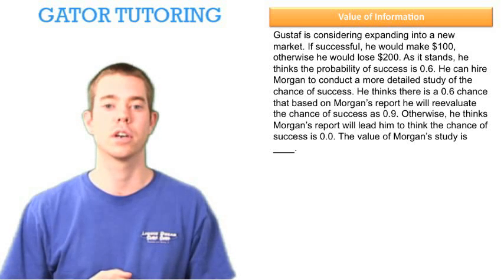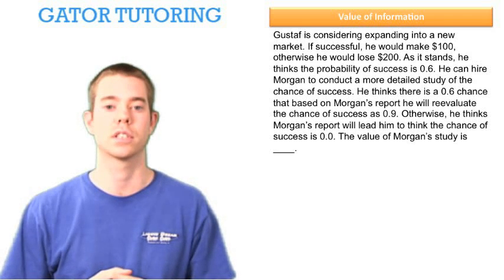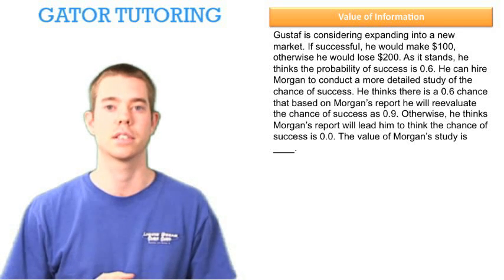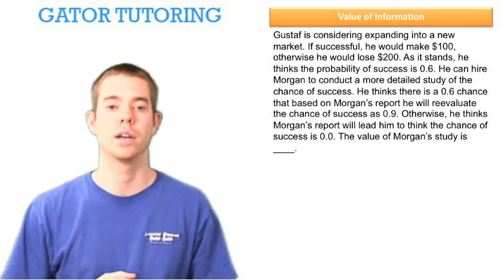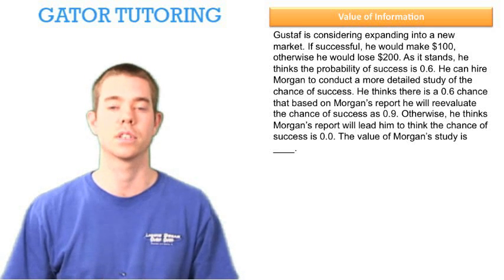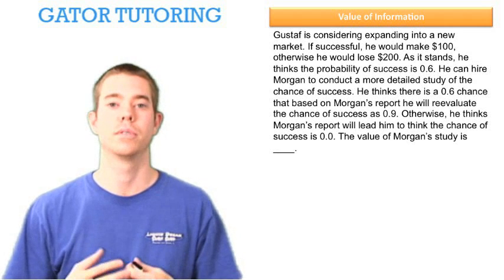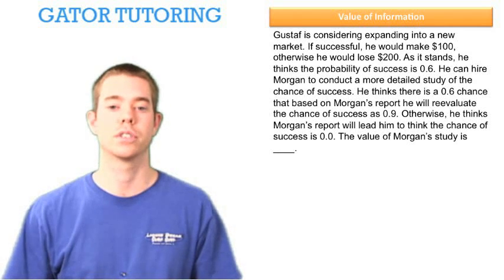He can hire Morgan to conduct a more detailed study of the chance of success. He thinks there's a 60% chance that, based on Morgan's report, he will re-evaluate the chance of success as 90%. Otherwise, he thinks Morgan's report will lead him to think the chance of success is 0%. We want to evaluate the value of Morgan's study.